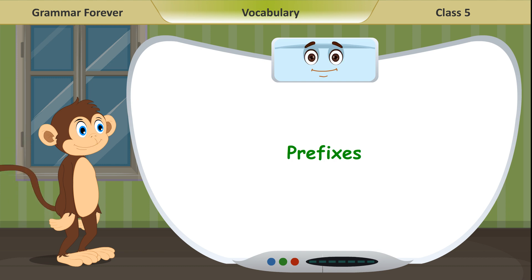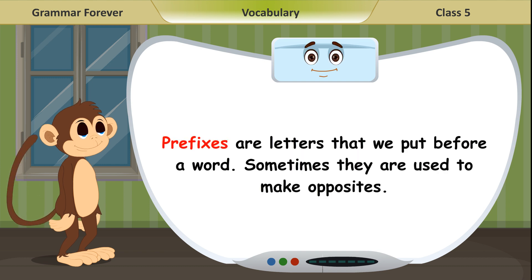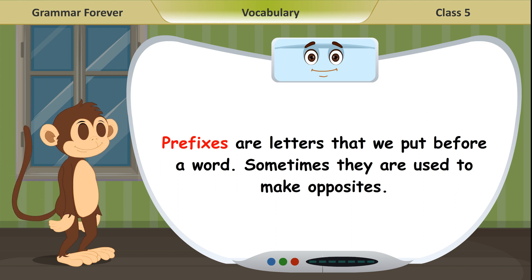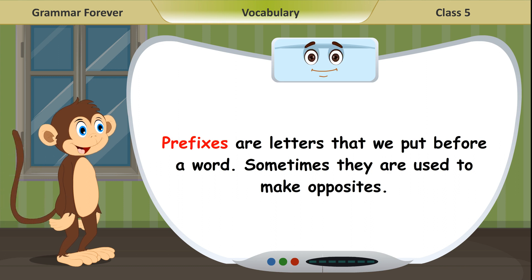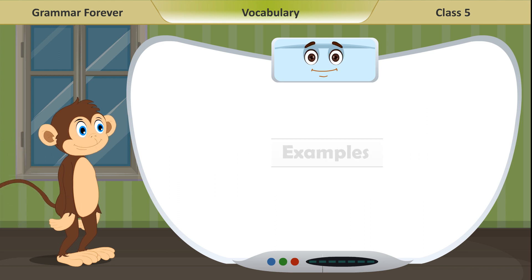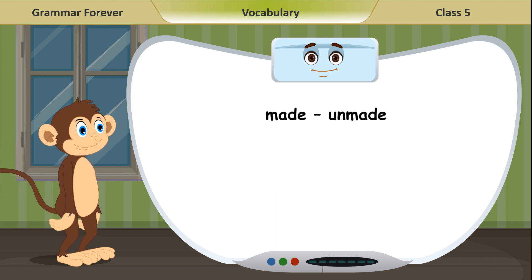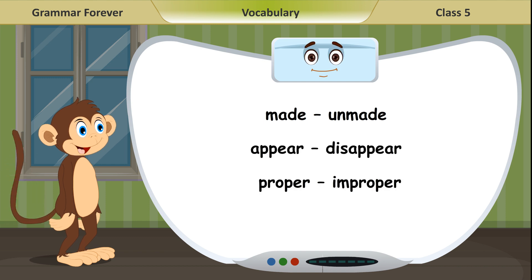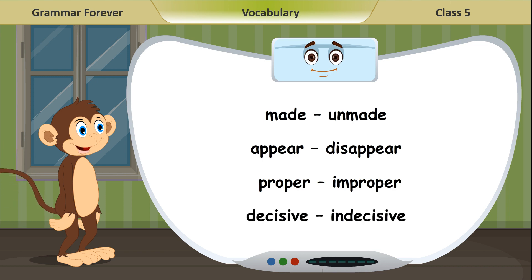Prefixes. Prefixes are letters that we put before a word. Sometimes they are used to make opposites. Examples: made — unmade; appear — disappear; proper — improper; decisive — indecisive.